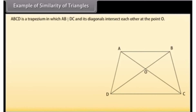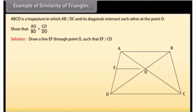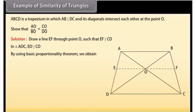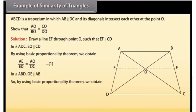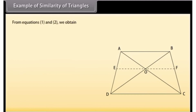ABCD is a trapezium in which AB is parallel to DC. Its diagonals intersect each other at point O. Show that AO/BO = CO/DO. Draw a line EF through point O such that EF is parallel to CD. In triangle ADC, EO is parallel to CD. By the Basic Proportionality Theorem: AE/ED = AO/OC ... (1). In triangle ABD, OE is parallel to AB. So, ED/AE = OD/BO, which implies AE/ED = BO/OD ... (2). From (1) and (2): AO/OC = BO/OD, which implies AO/BO = OC/OD.